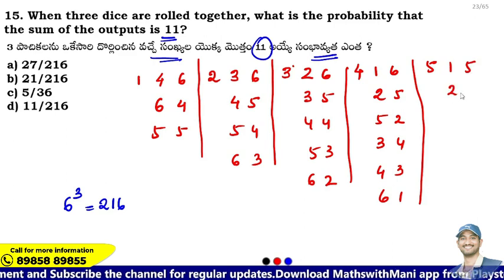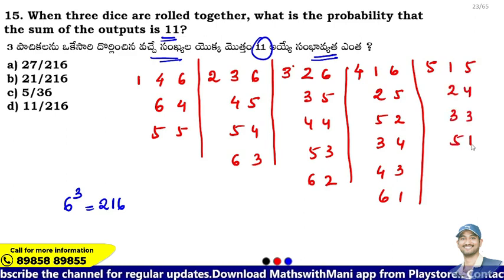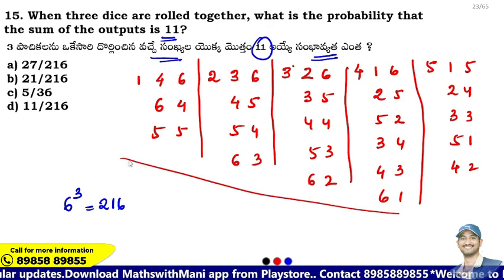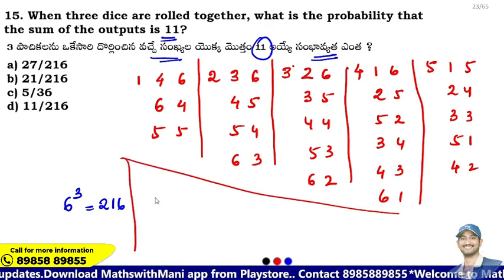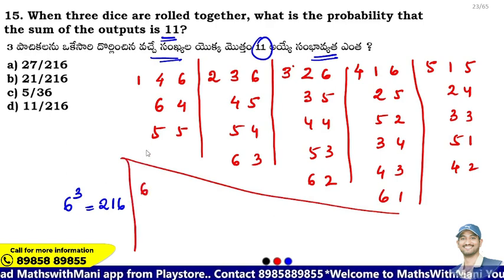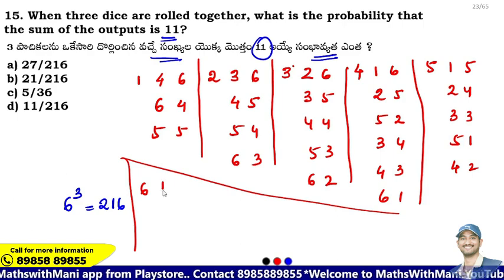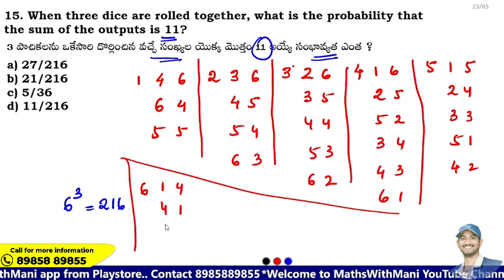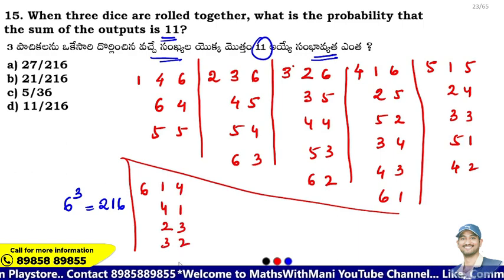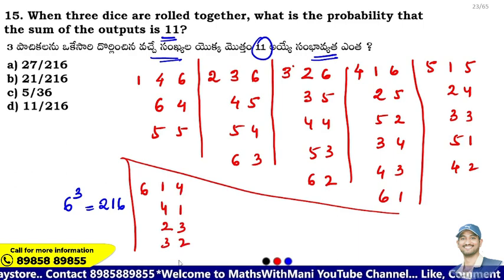So the combinations are: 1 and 5, 2 and 4, 3 and 3, 5 and 1, 4 and 2. The number of possibilities is 6. So total the number of possibilities is 6 and 10. Combinations: 1 and 4, 4 and 1, 2 and 3, 3 and 2.